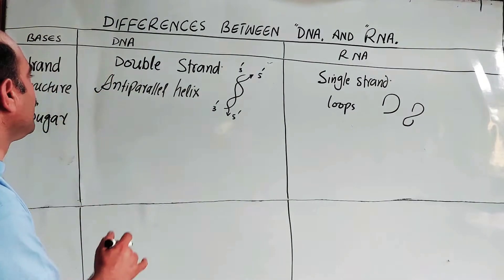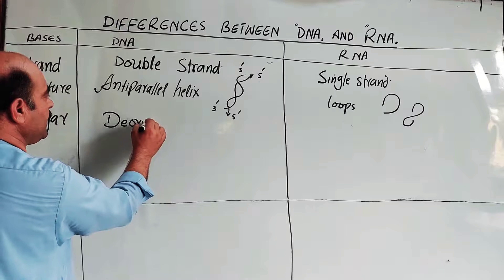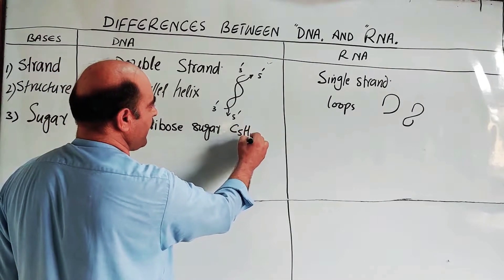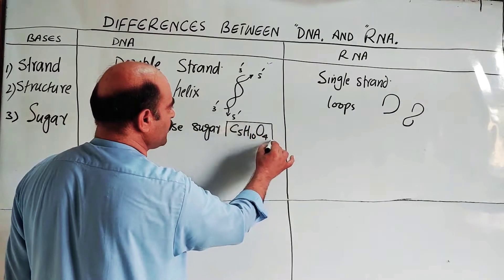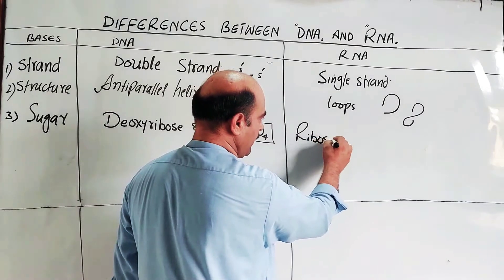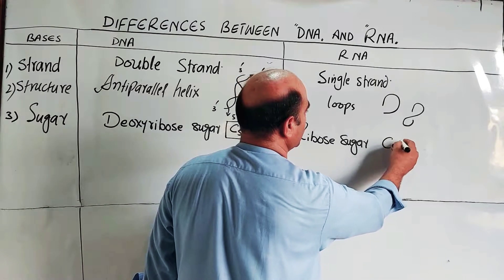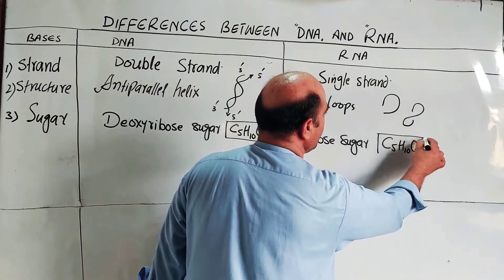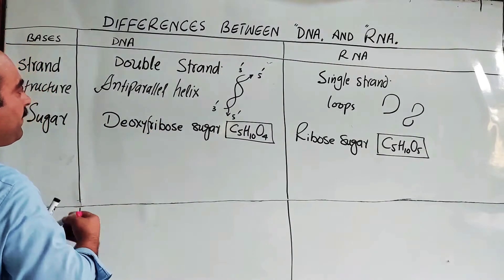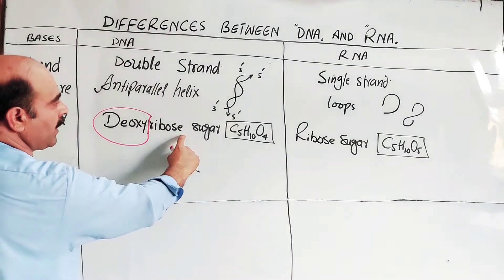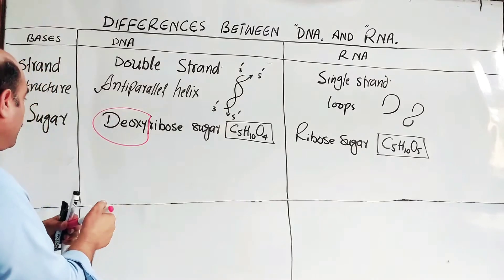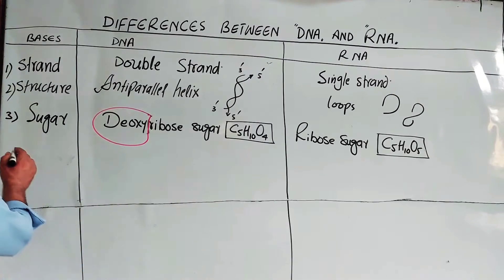The next difference is the sugar unit. For DNA, the sugar is called deoxyribose sugar, with the formula C5H10O4. For RNA, the sugar is called ribose sugar, with the formula C5H10O5. 'Deoxy' means less oxygen — deoxyribose has one less oxygen atom compared to ribose. So DNA has deoxyribose sugar (C5H10O4) and RNA has ribose sugar (C5H10O5).